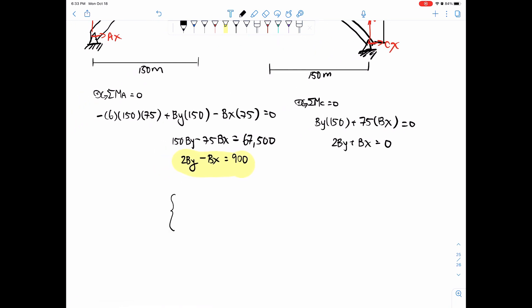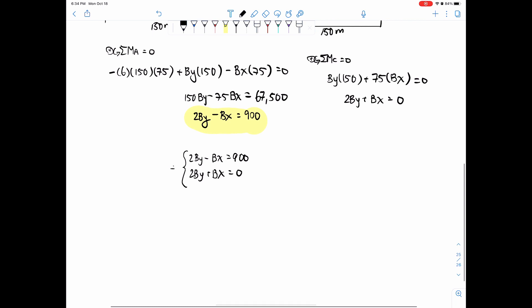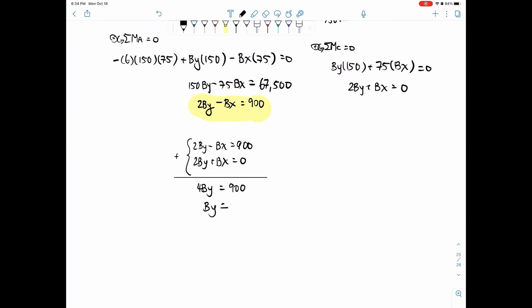So solving for this system of equations, we have 2BY minus BX equals 900. You could use substitution, but I'm just going to add them together, and then the BX will cancel out. So if you just add them together, you get 4BY, BX cancels out, and then you get 900. So divide by 4 would give you 225, and that is your BY value.